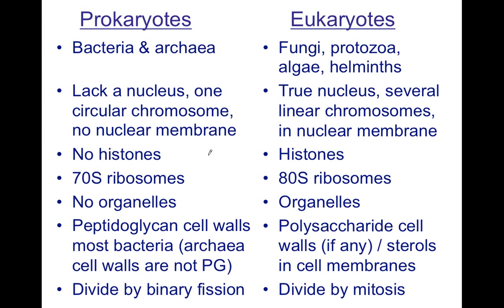What do I mean by organelles? In a prokaryotic cell, you just have your genetic material lying in there. But in the eukaryote, we have a cell, and then we have a nucleus in there — that pinkish-looking thing in the middle. In the nucleus, we have our genetic material. So the difference is: in the prokaryote we do not have a nucleus, but in the eukaryote we do.